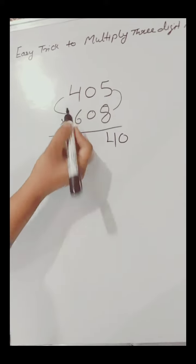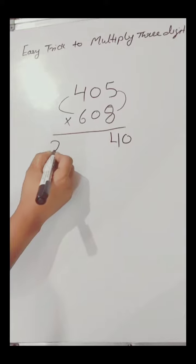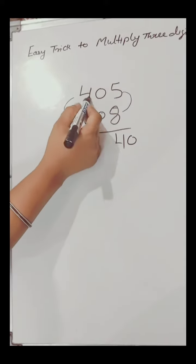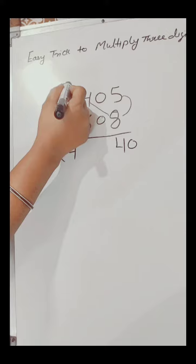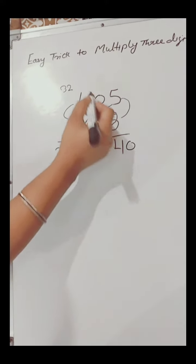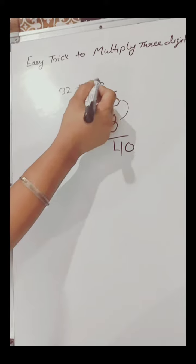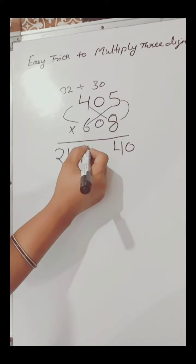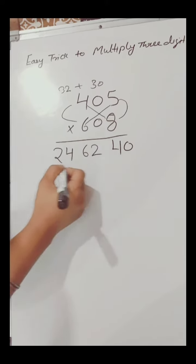Now we will cross multiply: 4 and 8, that is 32, and 6 and 5, which is 30. So 32 plus 30 equals 62. So the answer is 246240.